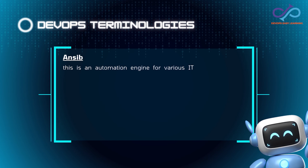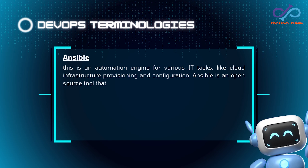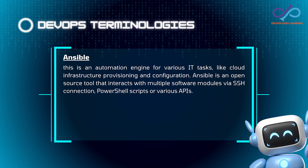Next on our list of DevOps terminology is Ansible. This is an automation engine for various IT tasks like cloud infrastructure provisioning and configuration. Ansible is an open source tool that interacts with multiple software modules via SSH connection, PowerShell scripts, or various APIs.